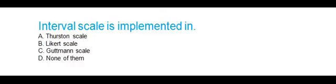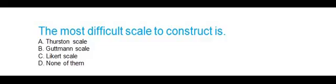An interval scale is implemented in: Thurstone scale, Likert scale, Guttman scale, or none of them. The correct answer is the Thurstone scale. The most difficult scale to construct is: Thurstone scale, Guttman scale, Likert scale, or none of them. The correct answer is the Guttman scale is the most difficult scale to construct.